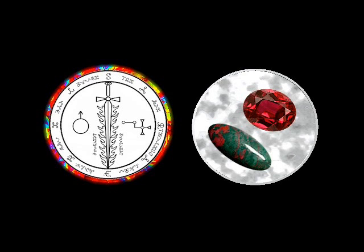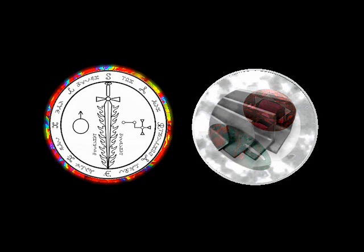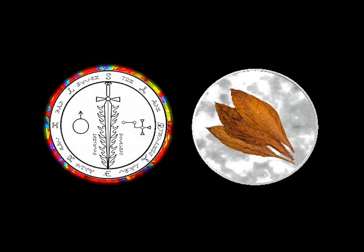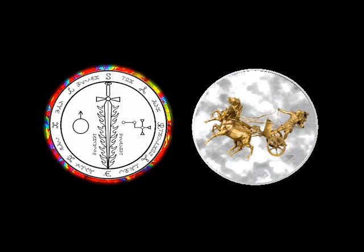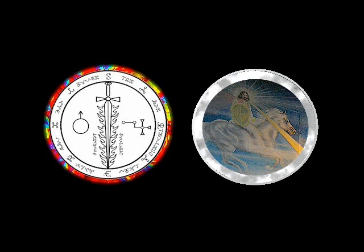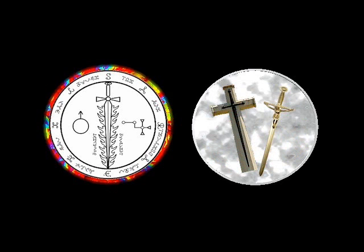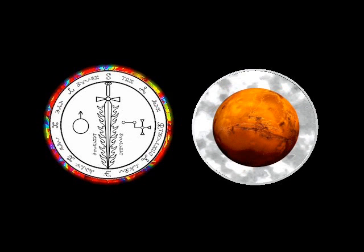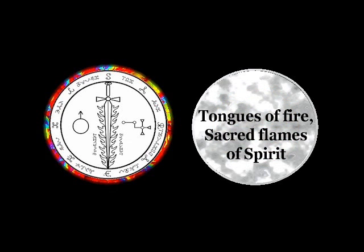Stone: Ruby or Bloodstone. Metal: Steel. Incense: Tobacco or Charcoal. Image: The Charioteer Christ with Sword of Mouth on White Horse. Symbol: Sword Crucifix. Planet: Mars. Elemental Energy: Tongues of Fire, Sacred Flames of Spirit.